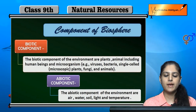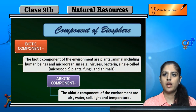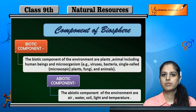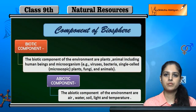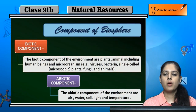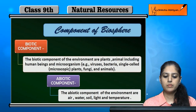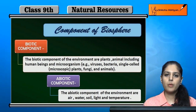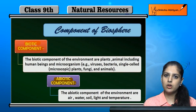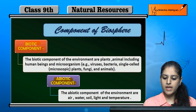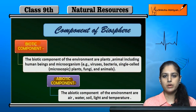The three types of the biosphere are the lithosphere, hydrosphere, and atmosphere. If we look at the components of biosphere — components meaning what is included — there are two: the biotic component and the abiotic component.